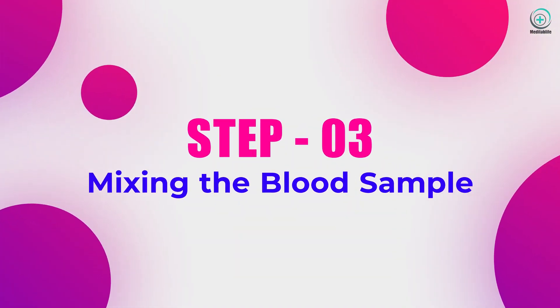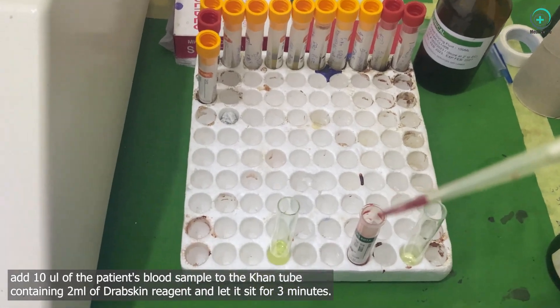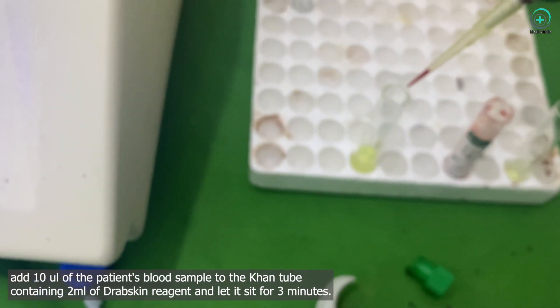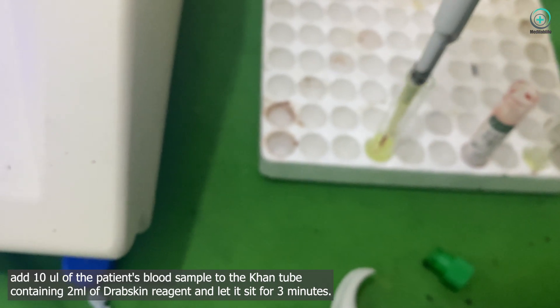Step 3: Mixing the blood sample. Use a micropipette to add 10 microliters of the patient's blood sample to the con tube containing 2 milliliters of Drabkin's reagent and let it sit for 3 minutes.